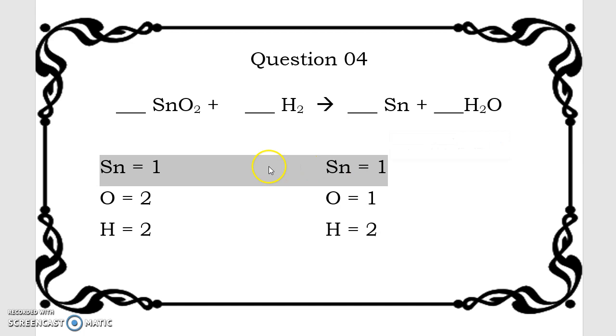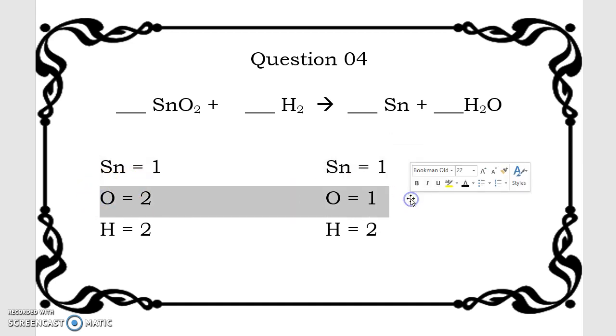So, looking first, Sn atoms, these look good. Okay, oxygen atoms are unbalanced, so we're going to say 1, we need to bring it up to 2.